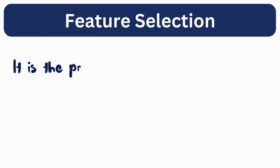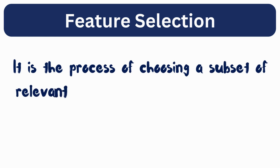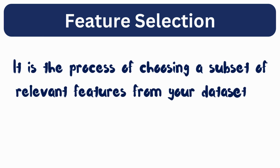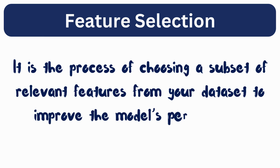Feature selection is a process of choosing a subset of relevant features from your dataset to improve the model's performance. By removing the irrelevant or redundant features, you can avoid overfitting, speed up training, and make your model more interpretable.